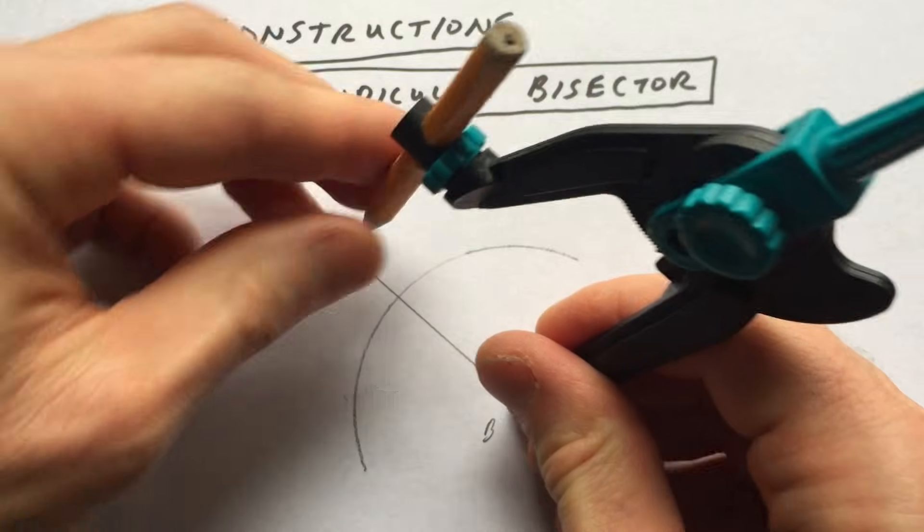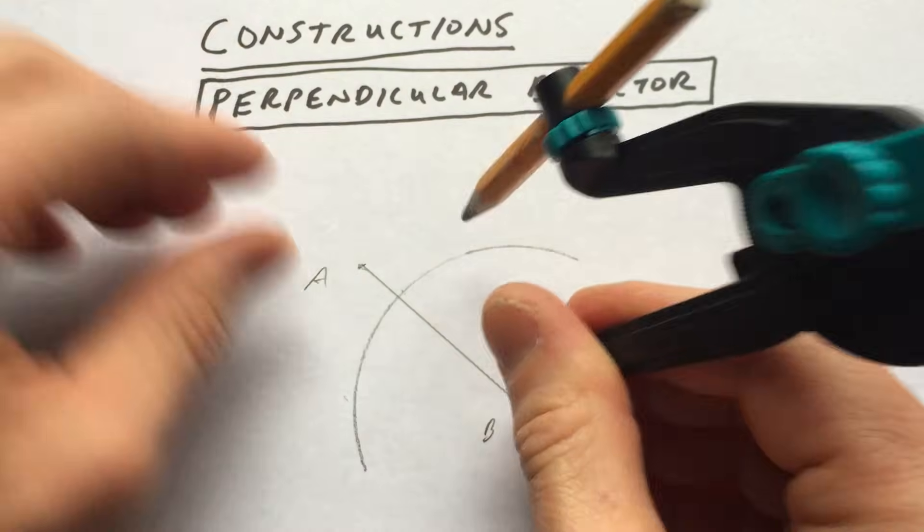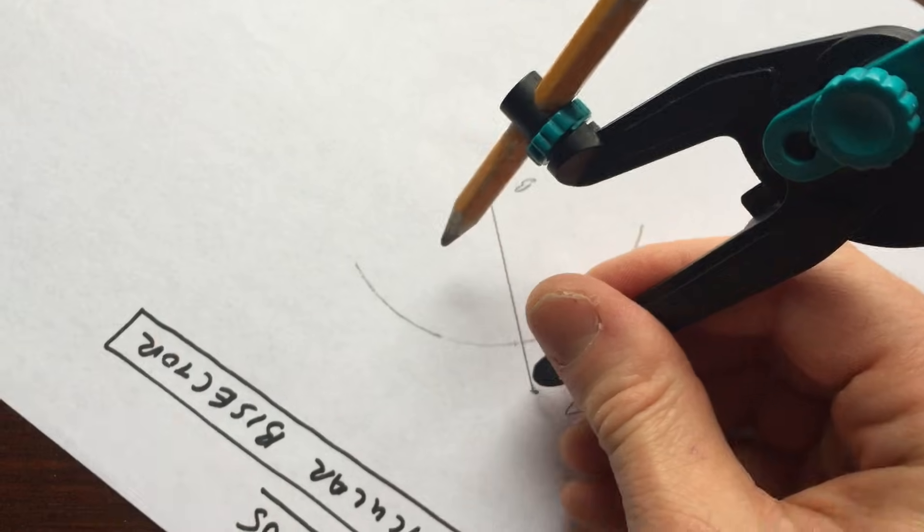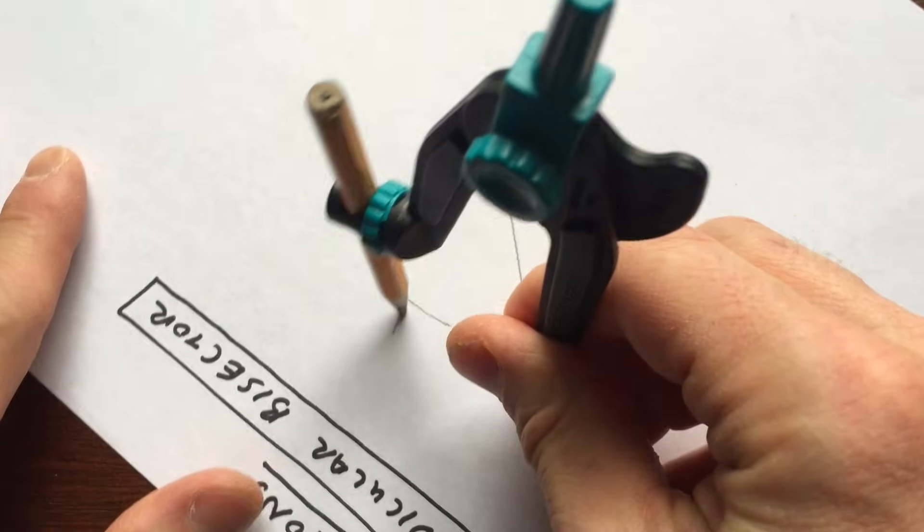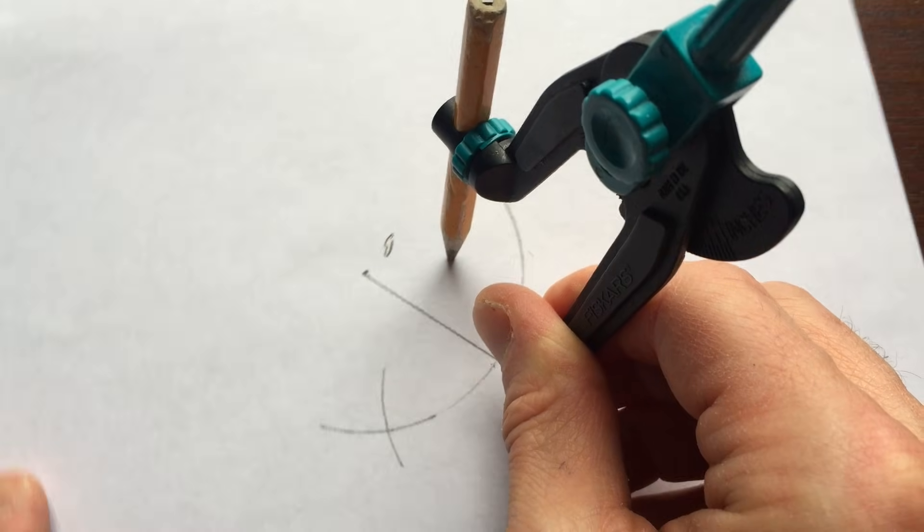So let me just make sure we've got it correct here. So we've got this arc, and then we're going to, let me just rotate the paper like this. We're going to make another arc above and below.